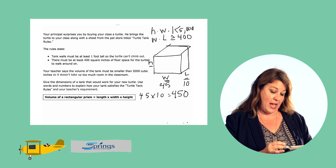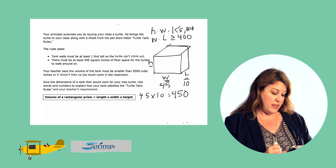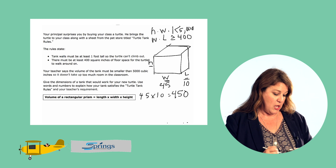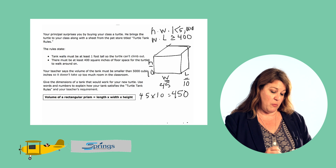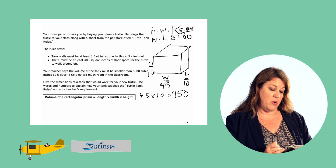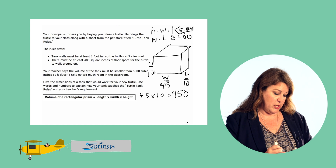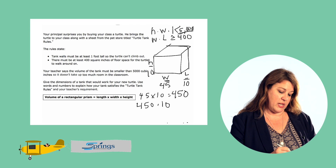The height times the width times the length has to be less than 5,000. So whatever the height is, multiplied by 450, has to be less than 5,000. Let's make our height 10 — it's easy to multiply by 10. So we have 450, which equals the width times the length, and we multiply that by the height of 10. That gives us 4,500, which is less than the requirement of 5,000 cubic inches. So 450 times 10 is 4,500.